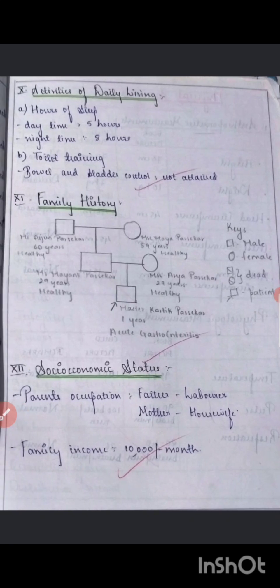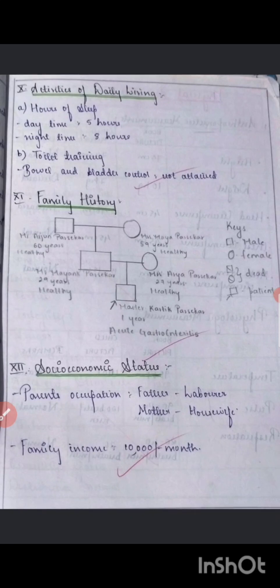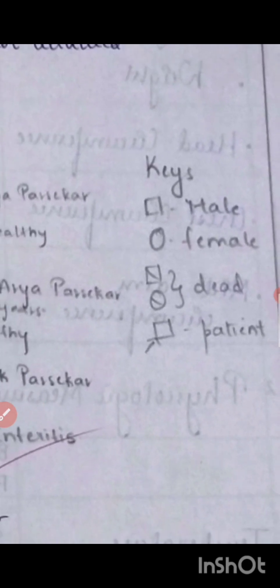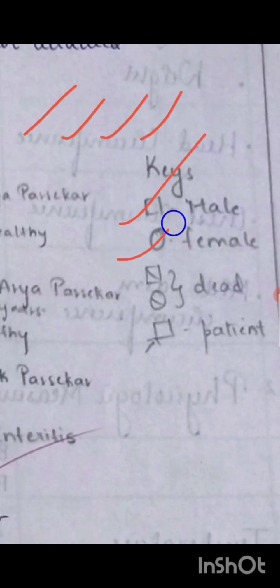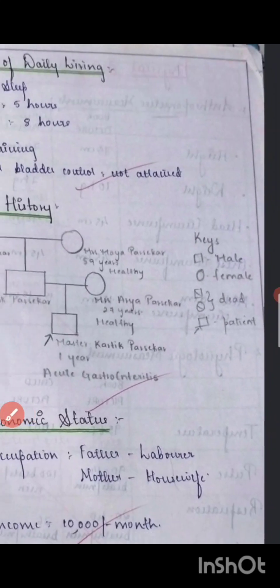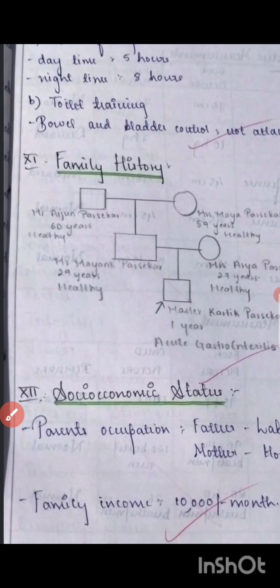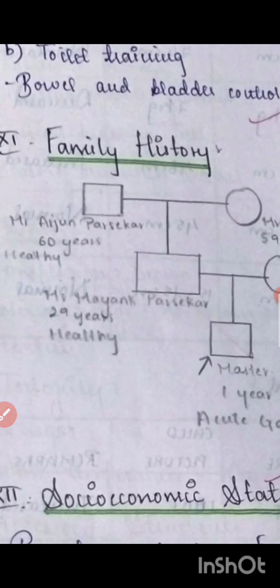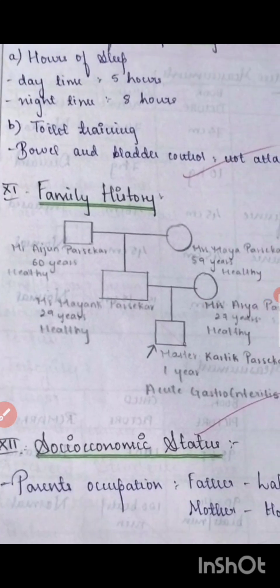Then mention the family history, covering three generations. Use the standard keys: square for males, circle for females, a crossed symbol if the person is deceased, and an arrow indicating the patient. Write the name of each family member, their age, and whether they are healthy or not.